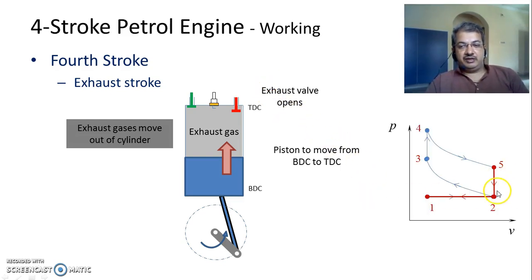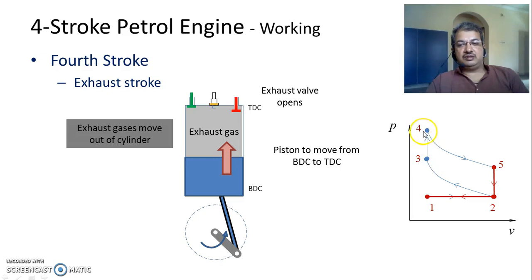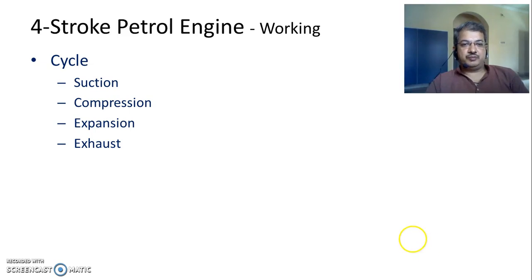This process is represented by two lines: 5 to 2 indicating a sudden reduction in pressure due to the opening of the exhaust valve, and then 2 to 1 as the piston moves from Bottom Dead Centre to Top Dead Centre with the volume reducing. So this cycle — suction (1 to 2), compression (2 to 3), expansion (3 to 4 and 4 to 5), and exhaust (5 to 2 and 2 to 1) — repeats continuously. The cycle has all four different strokes.